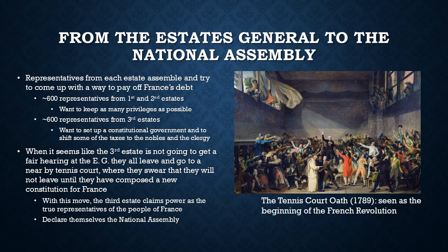When Louis XVI assembled the Estates General, representatives from each estate were elected to come up with a way to pay off France's debt. There were approximately 600 representatives from the first and second estates, who wanted to keep as many of their privileges as possible. There was also a roughly equal number of representatives from the third estate, who wanted to set up a constitutional government and shift some of the taxes onto the nobles and clergy.